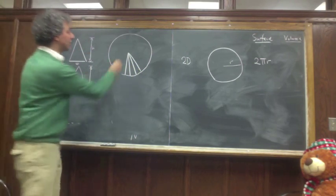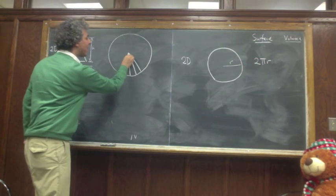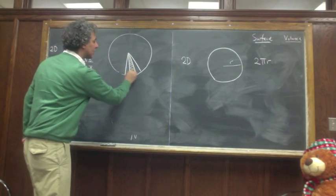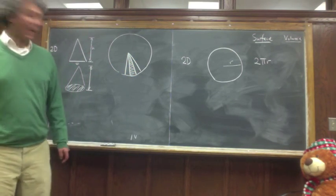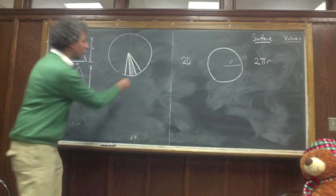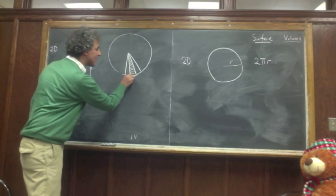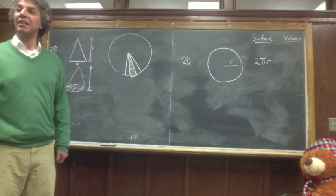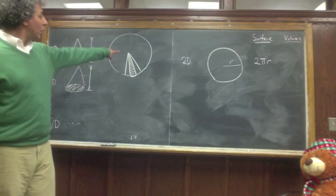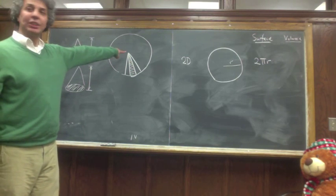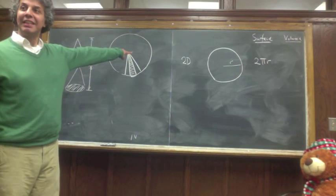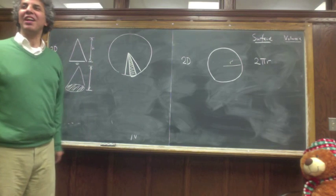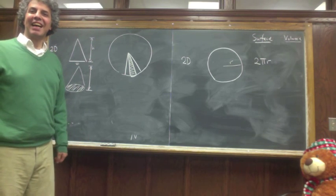I want you to notice that every slice, if they are thin enough, this curvature will be negligible, and will look like a triangle. So this circle is nothing but a bunch of triangles.